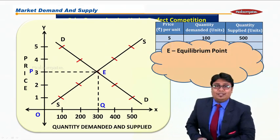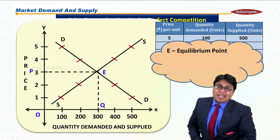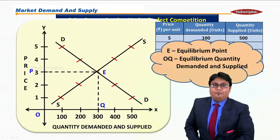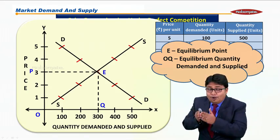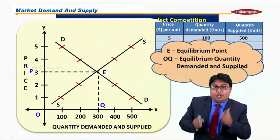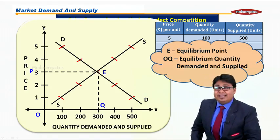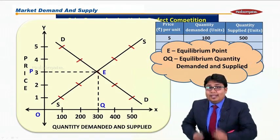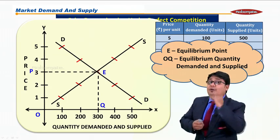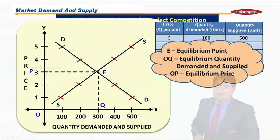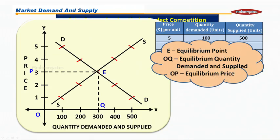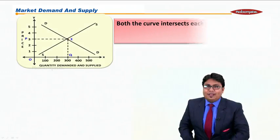I hope we have concluded this diagram, students. My point E is the equilibrium point. Further, OQ—which is point of origin to Q—is equilibrium quantity demanded and supplied, whereas OP, from point of origin to P, is nothing else but the equilibrium price.